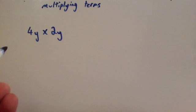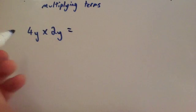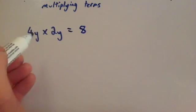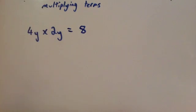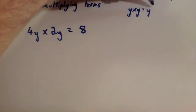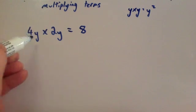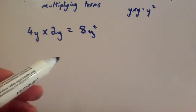Now let's look at 4y times 2y. Again, multiply the numbers together first, so 4 times 2 is 8. Now you need to be careful here — y times y. Some people write 8yy, but that's not proper notation. Remember, y times itself is y squared. So the answer would be 8y squared.